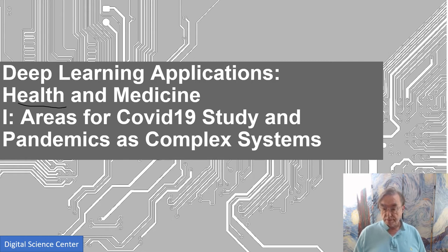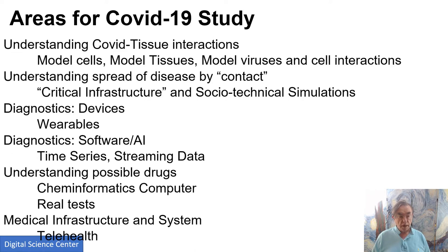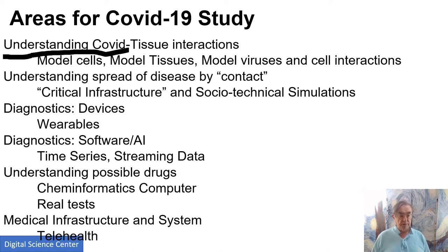These were the areas we identified. Understanding how COVID interacts with tissues — you have to model cells, tissues, viruses, and the cell-virus interactions. You also have to understand how the disease is spread by contact, which is actually the same technology used in models of critical infrastructure, so-called socio-technical simulations.